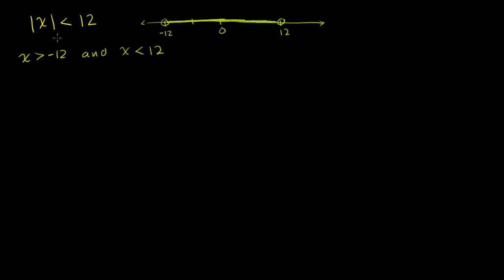We've solved it, because this is only a one-step equation, but I think it lays a good foundation for the next few problems. In interval notation, it would be everything between negative 12 and positive 12, not including those numbers. Or we could write it as: x is less than 12 and is greater than negative 12. That's the solution set.